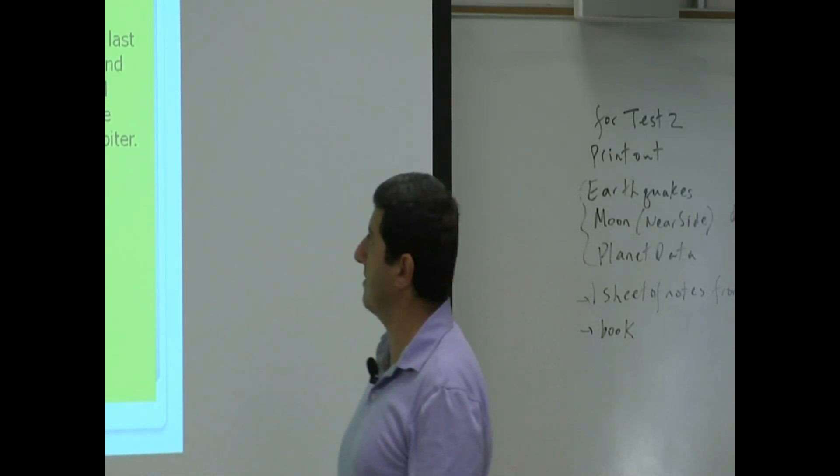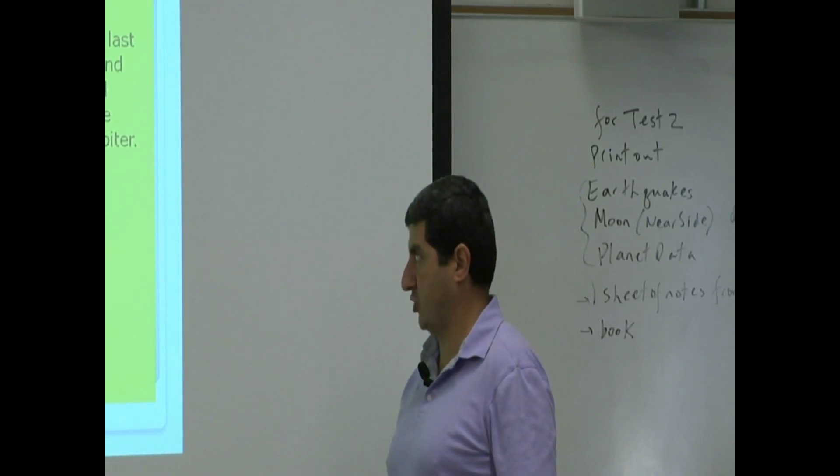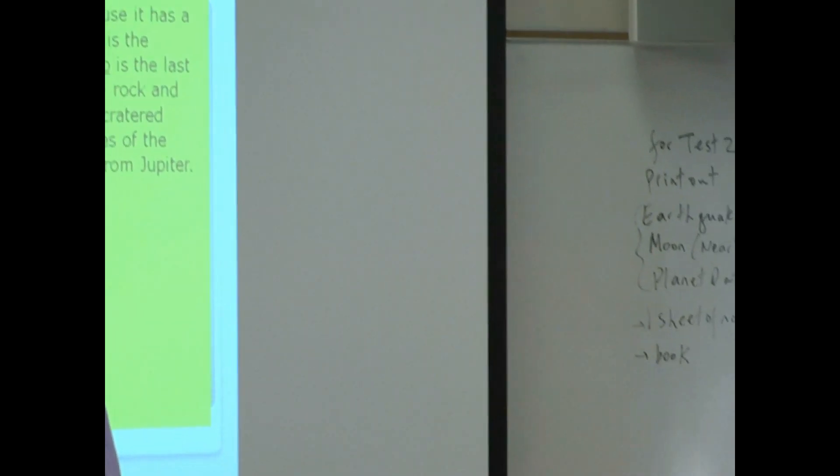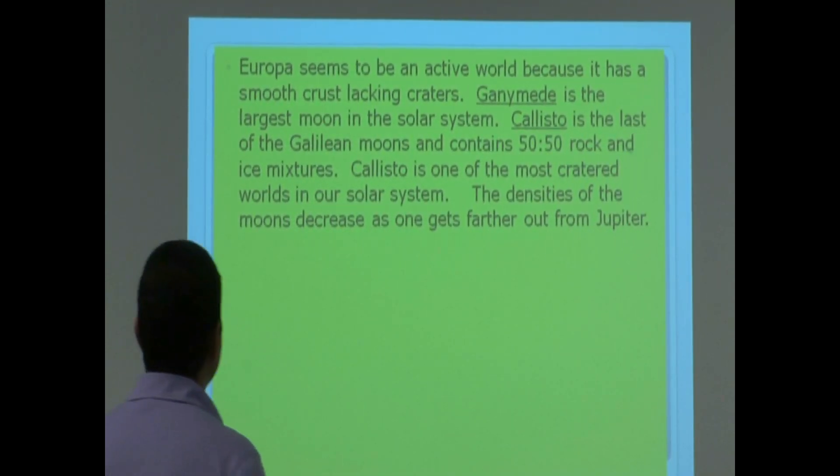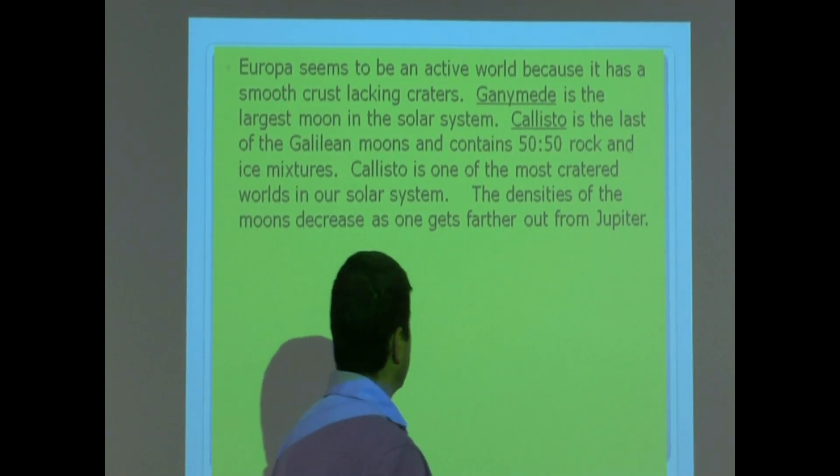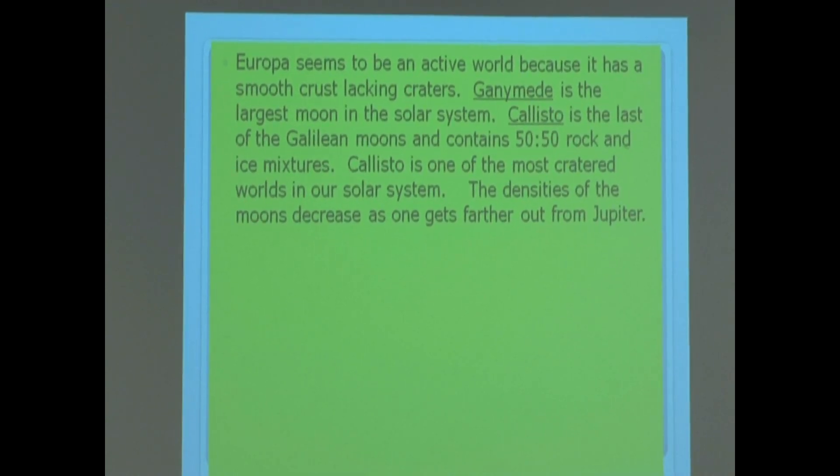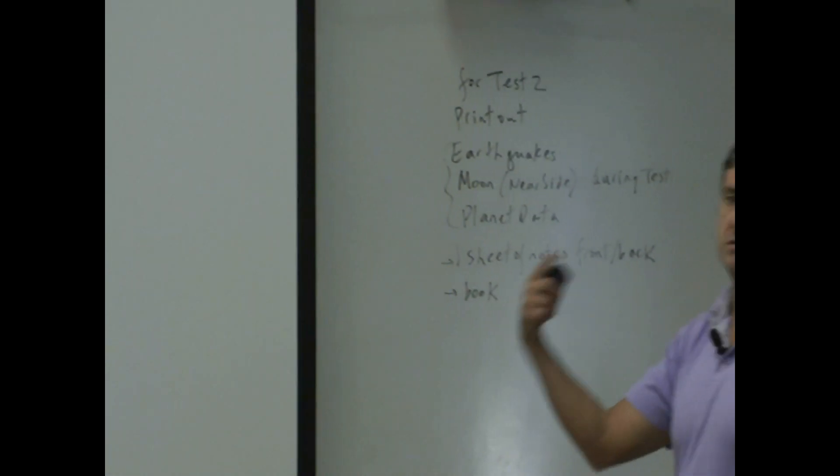Callisto is the last of the Galilean moons and contains a 50 to 50 rock and ice mixture. Callisto is one of the most cratered worlds in our solar system, okay? The densities of the moons decreases as one gets farther out from Jupiter. That means Io is the densest, then Europa, then Ganymede, then Callisto.